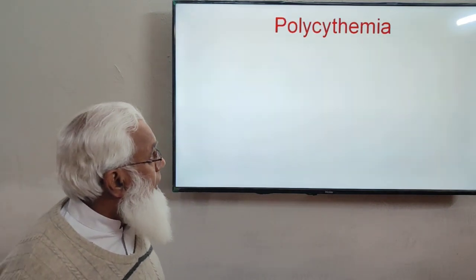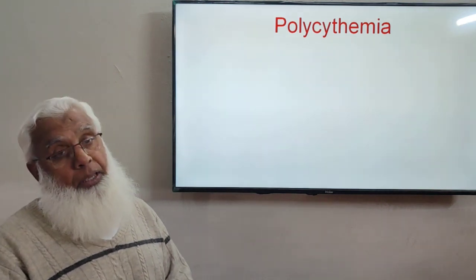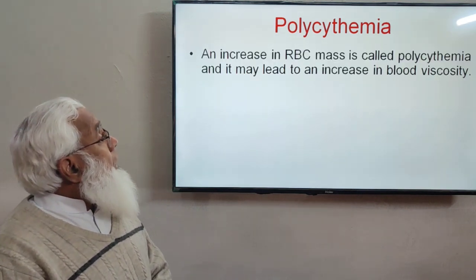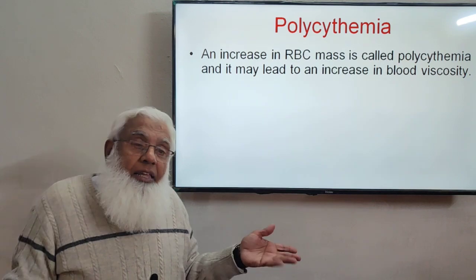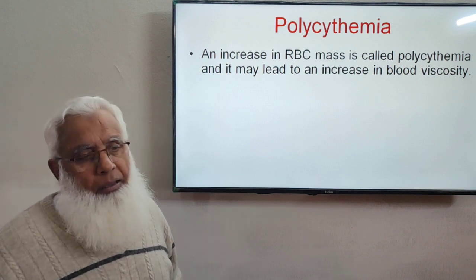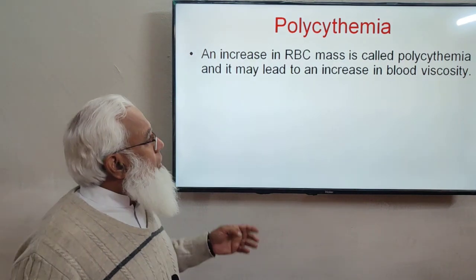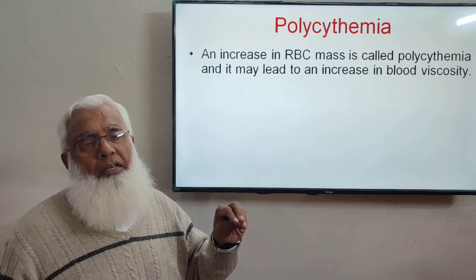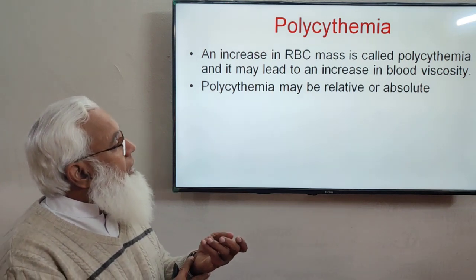If the number of RBCs is increased, this is known as polycythemia. Polycythemia may lead to increased blood viscosity, which is dangerous. High-altitude dwellers have relative polycythemia compared to those at low altitude. If the number of RBCs is very high, viscosity increases and RBCs can clog or block blood vessels. Polycythemia may be relative or absolute.